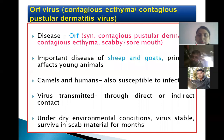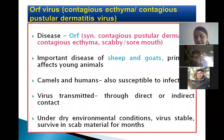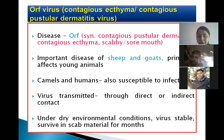Camels and humans are also susceptible to the infection, and virus transmission occurs through direct or indirect contact. Under dry environmental conditions, the virus is stable and can survive in scab materials for months, which acts as a source of infection to other animals.